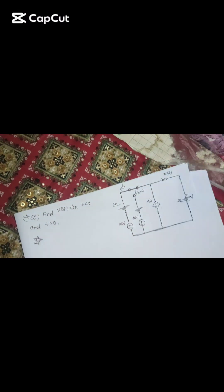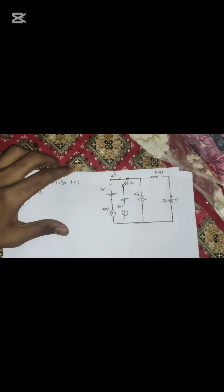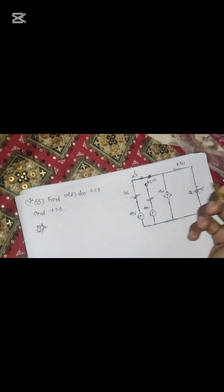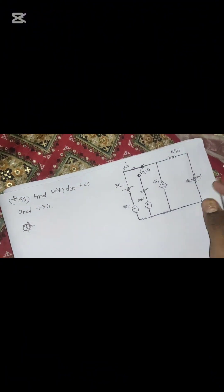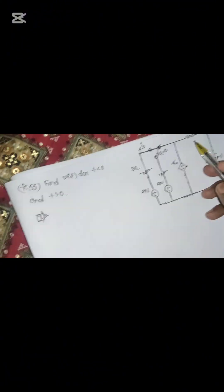Welcome everyone. Today we are solving problem 7.55 from Sadiku's book. The problem says: find V(t) for t less than zero and t greater than zero — so the circuit is currently in normal mode or transient mode.